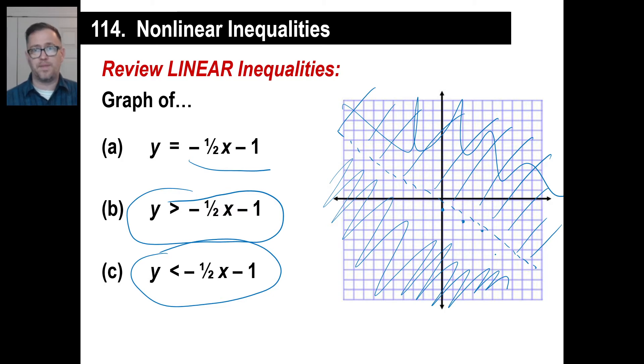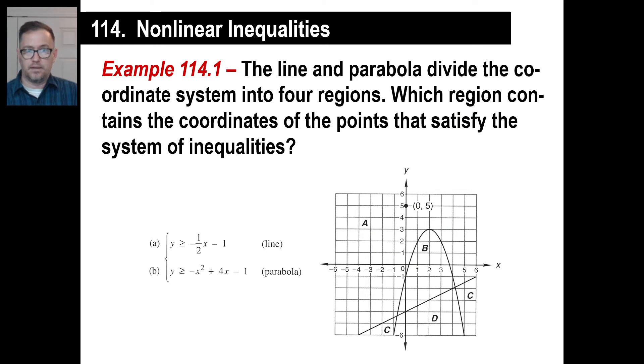That's basically the same thing we're doing, and this is a super short and simple lesson. Let's look at the instructions very quickly. The line and parabola divide the coordinate system into four regions. Which region contains the coordinates of the points that satisfy the system of inequalities? That's a fancy way of saying which chunk A, B, C, or D satisfies both conditions?